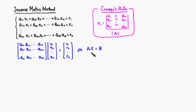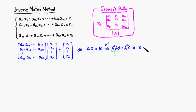The goal is to find capital X. What we can do is apply the inverse matrix A⁻¹ to both sides. Applying A⁻¹ from the left: A⁻¹A gives the identity matrix, so identity times X is simply X. Therefore X equals A⁻¹R — to find the variable matrix, multiply the right-hand side matrix by the inverse of the coefficient matrix from the left.